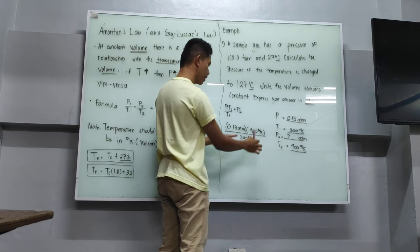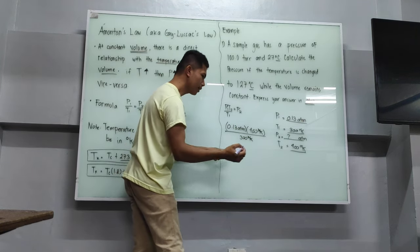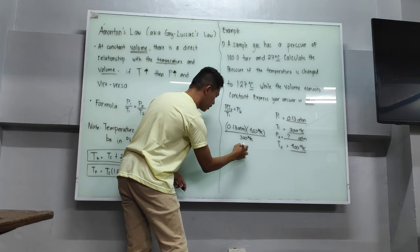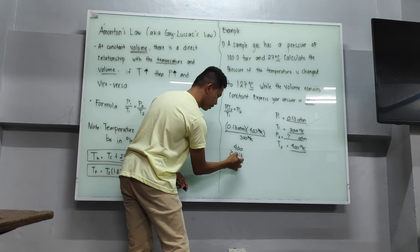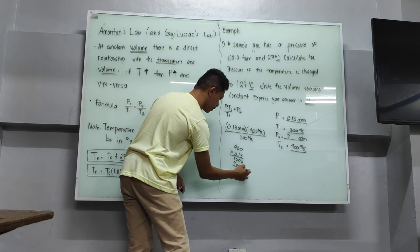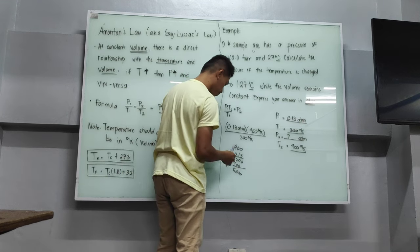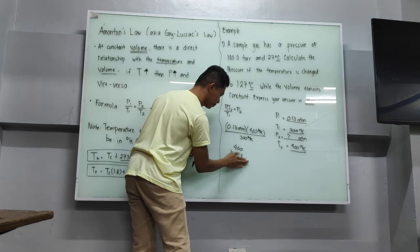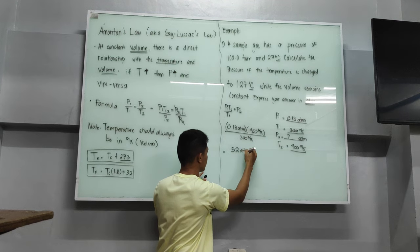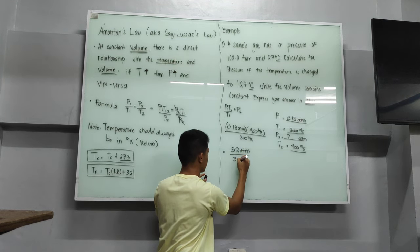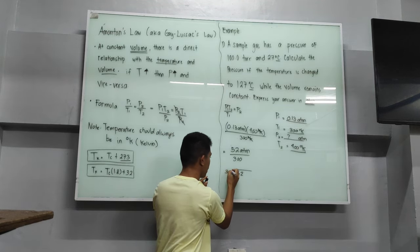So we compute 400 times 0.13. Solving manually: 400 times 0.13 equals 52, and we have two decimal places, giving us 52 over 300. Then 52 divided by 300 gives us our result.